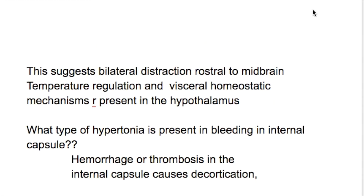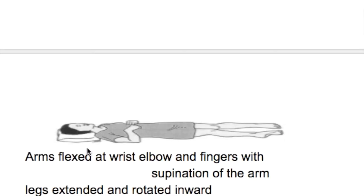Why does the animal become hyperactive in decortication? Because the cerebral cortex controls the excitatory reticular activating system. Removal of the cerebral cortex leaves the excitatory action of the reticular activating system unopposed, and that excites the gamma motor neurons, producing rigidity.